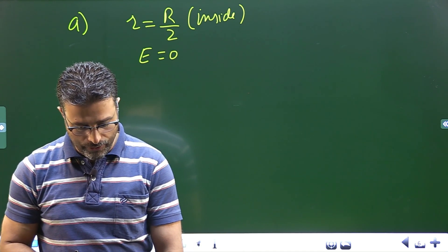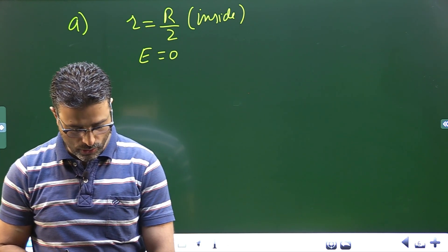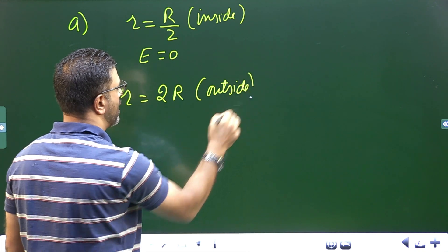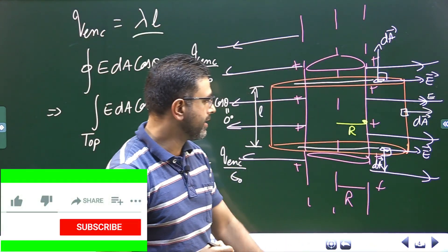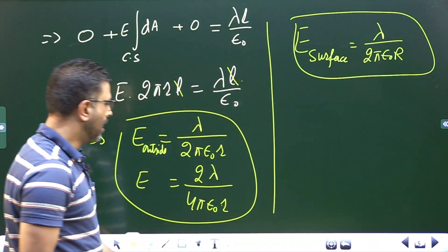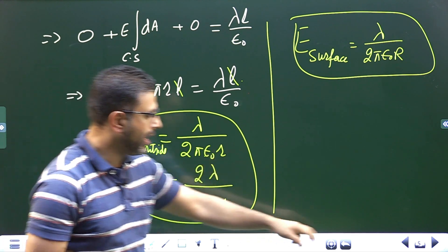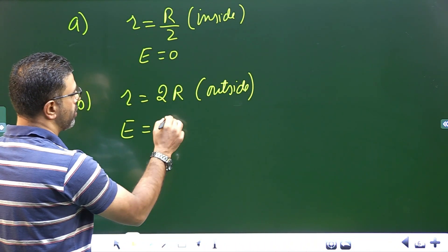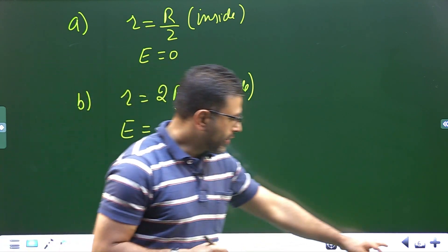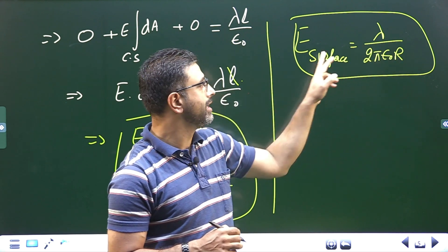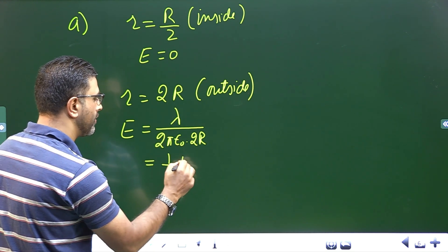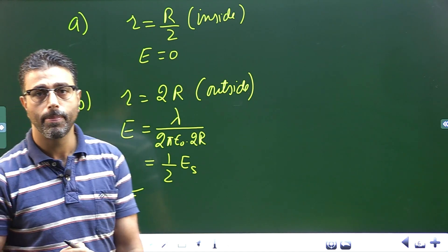Part B asks for the field at a distance of twice R. Since 2R is outside the cylinder, we use the outside formula: E equals lambda divided by 2πε₀ times (2R). Comparing with the surface field lambda/(2πε₀R), we see this equals half the field on the surface — the extra factor of 2 in the denominator makes it half of E on the surface.